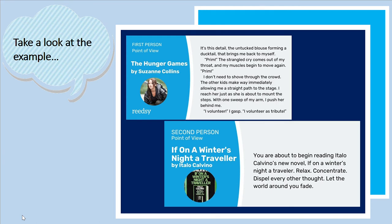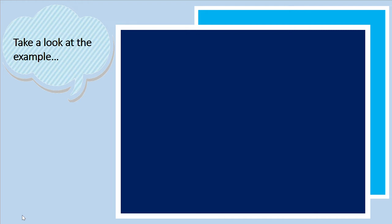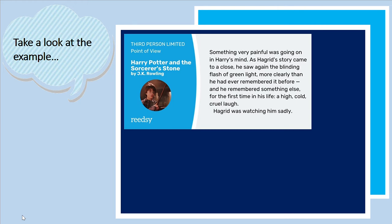For second person POV, an example is from If on a Winter's Night, a Traveler by Italo Calvino: 'You are about to begin reading Italo Calvino's new novel. Relax, concentrate, dispel every other thought. Let the world around you fade.' The speaker uses the pronoun 'you.' For third person POV, an example from Harry Potter and the Sorcerer's Stone by J.K. Rowling: 'Something very painful was going on in Harry Potter's mind.' The narrator uses 'he' to describe Harry Potter's experience.